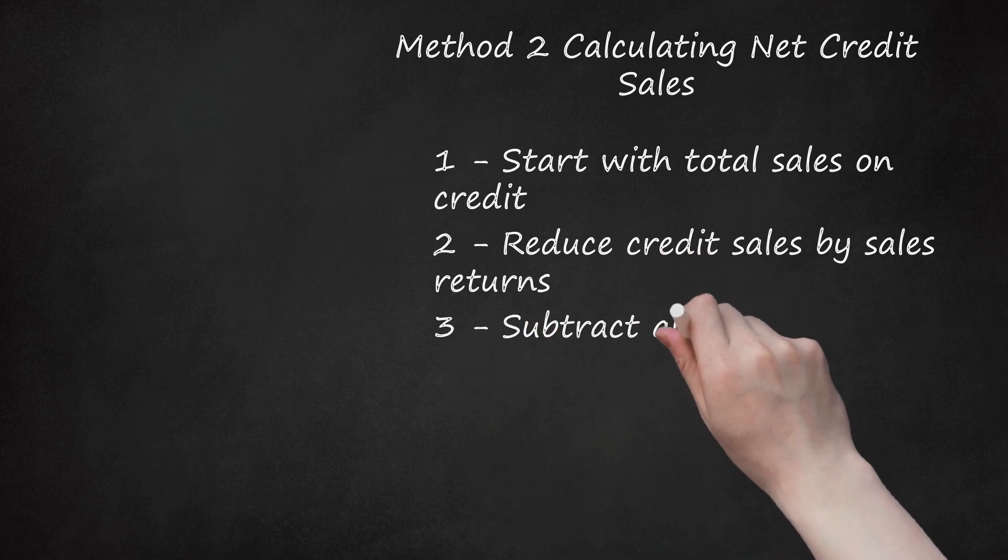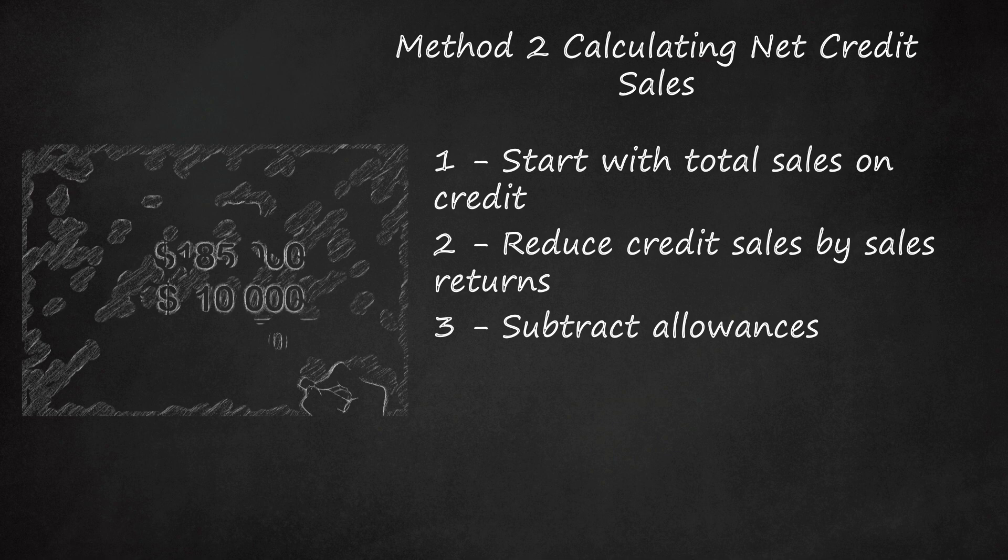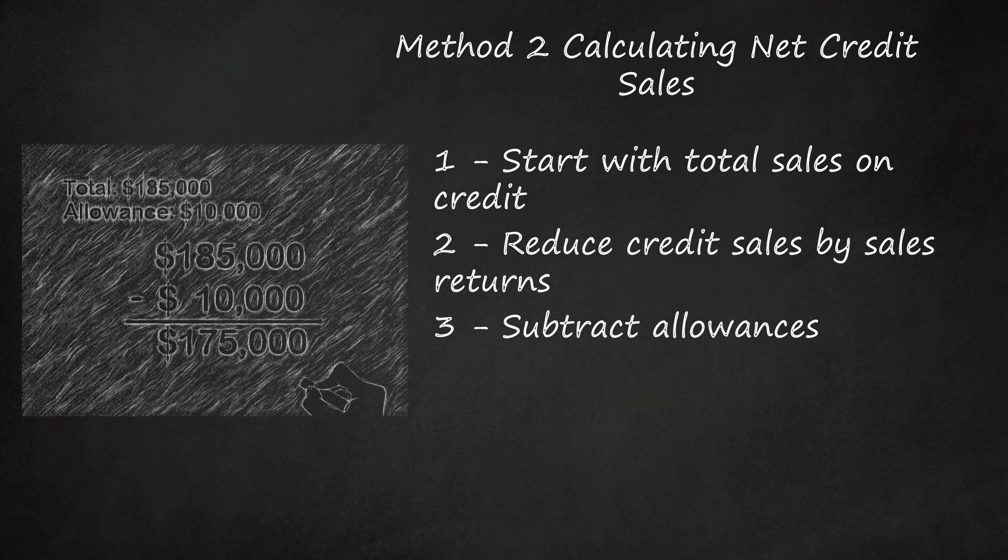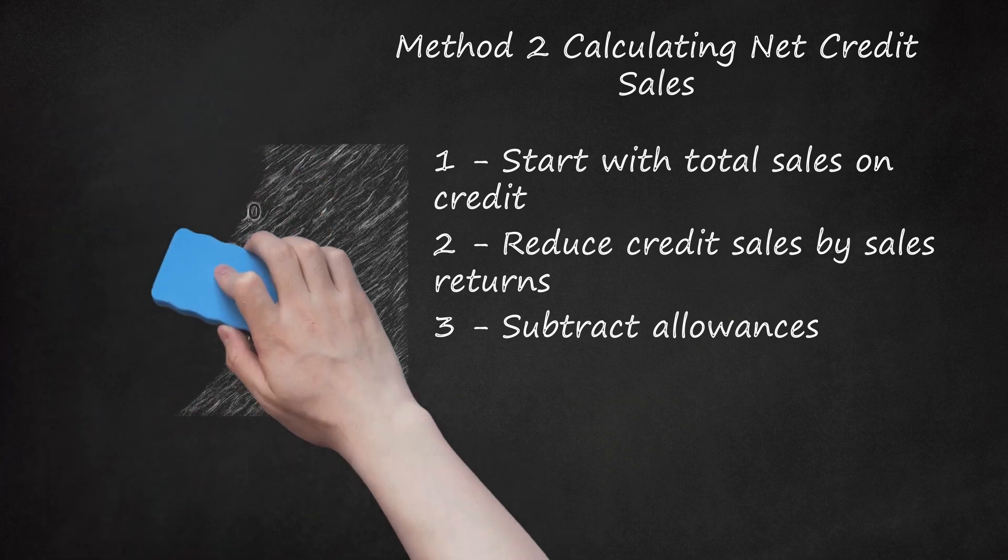Subtract allowances. Allowances are discounts given to customers for a variety of reasons. For example, a company might allow early payment discounts or apologize for an order that arrived late by reducing its price. These allowances also reduce net credit sales. Add up the total value of all allowances on credit sales over the period and subtract this amount from your total. For example, if the same company had $10,000 in allowances over the year, then they would further reduce their $185,000 total to $175,000. These transactions can be found in the General Ledger under Sales Returns and Allowances.